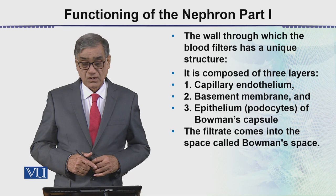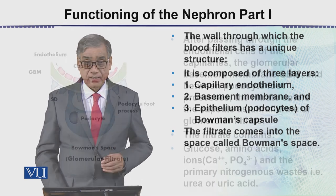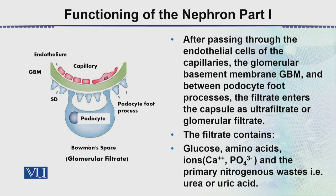The filtrate comes out into a space called the Bowman's space. In the diagram we have seen the red cells, which are the cells of the blood capillaries forming the glomerulus, and then there is the glomerular basement membrane shown in green.